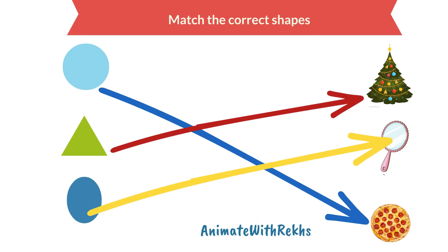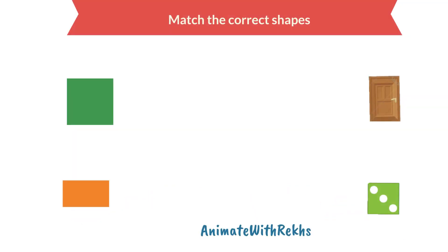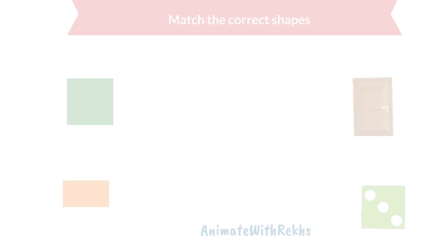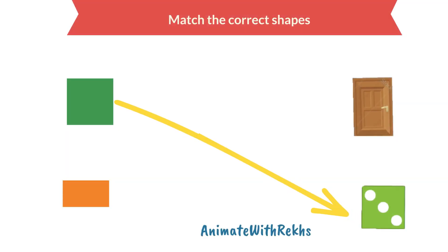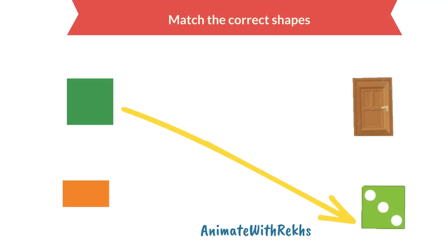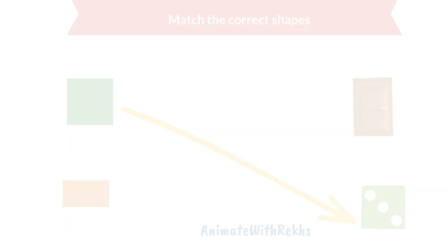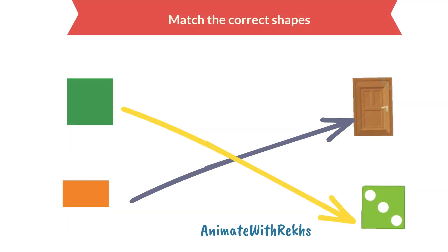Next, square — which object is in square shape? Dice. Then we match it. The last one is rectangle — which object is in rectangle shape? The door is in rectangle shape. So we match it. Next.